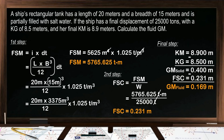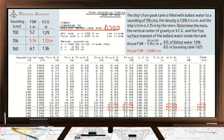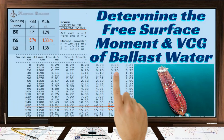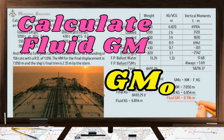This method can be used for a rectangular shaped tank. For tanks that are not rectangular in shape, on board we have a tank sounding table from which we extract the value of the free surface moment. If you want to know how to extract the value of the free surface moment using the ship's tank sounding table, and a more detailed explanation on how to calculate the fluid GM, I have made a separate video — kindly check the link in the description.